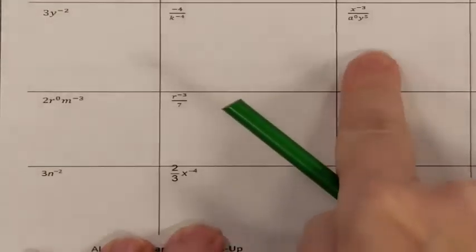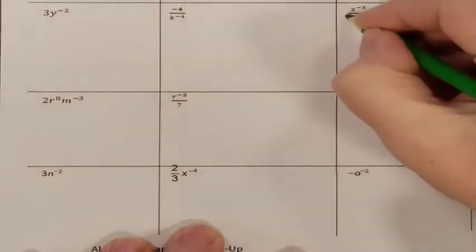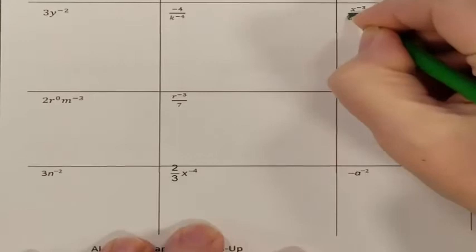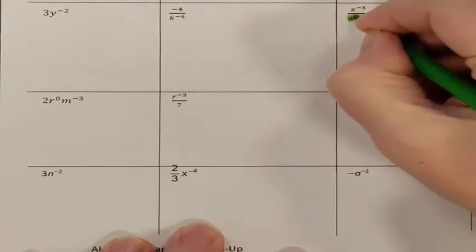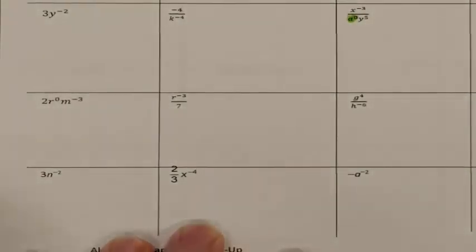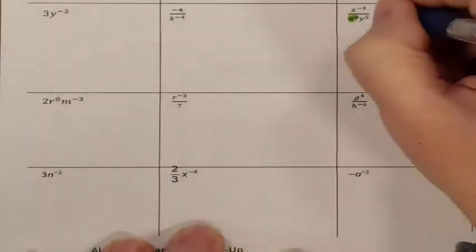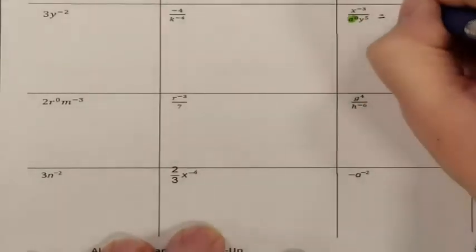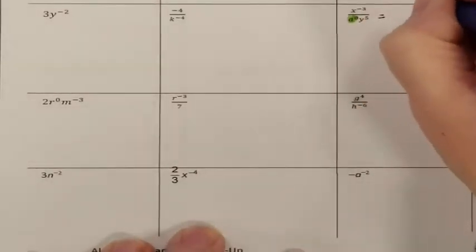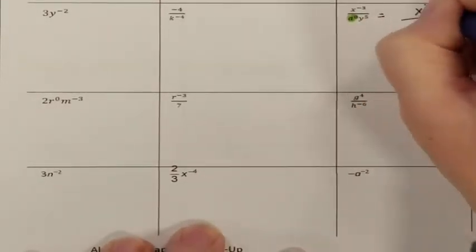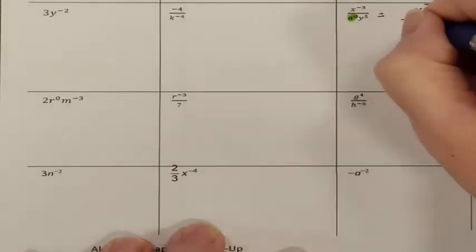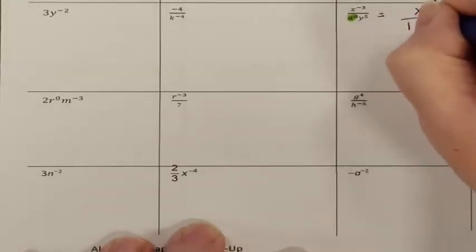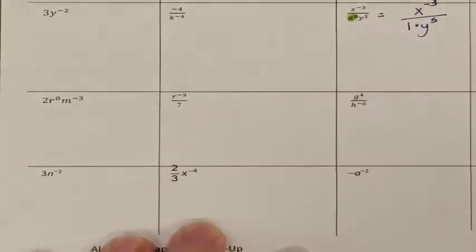Looking at this problem, the first thing I always look for is anything raised to the 0 power. This A is raised to the 0 power, which means that A is now a 1. So everything else is going to be written exactly the way that it was, but I am now going to rewrite every single A to the 0 as 1.